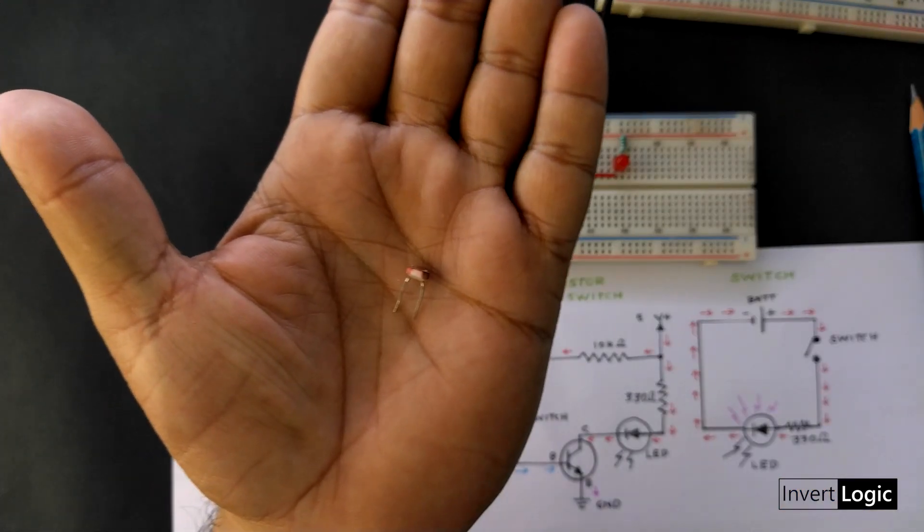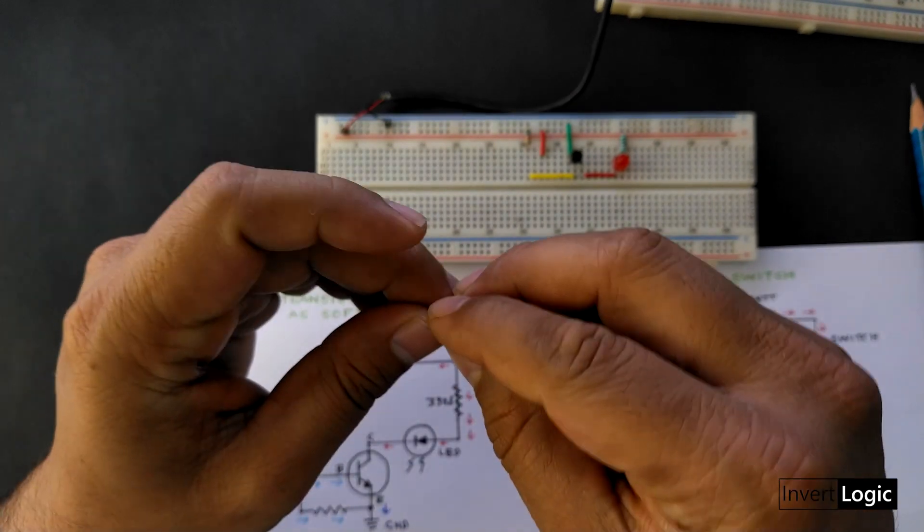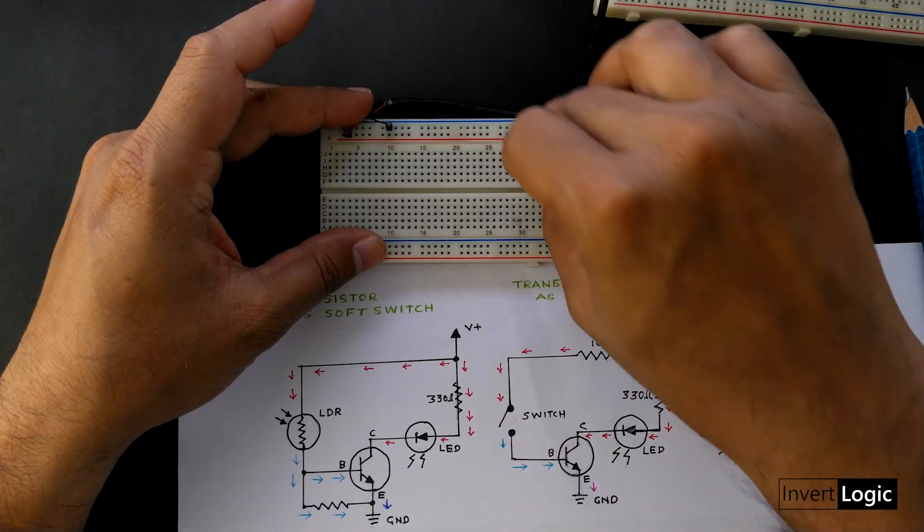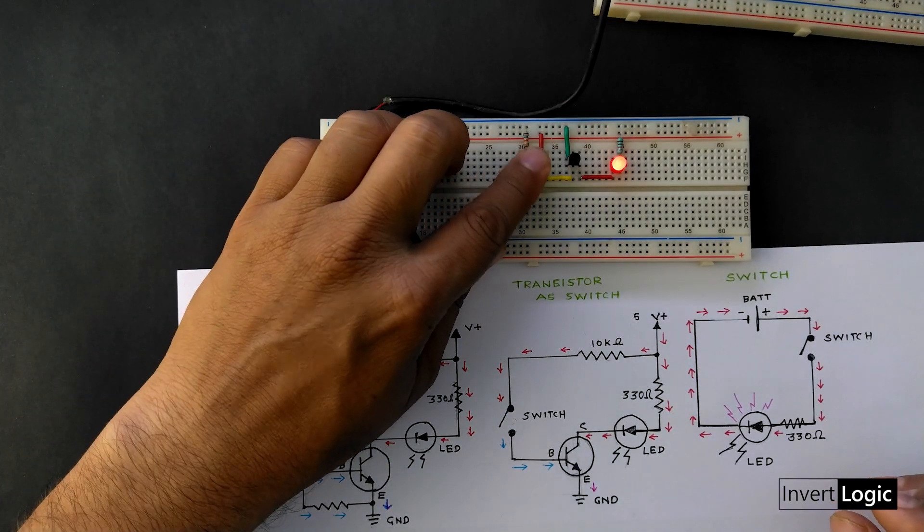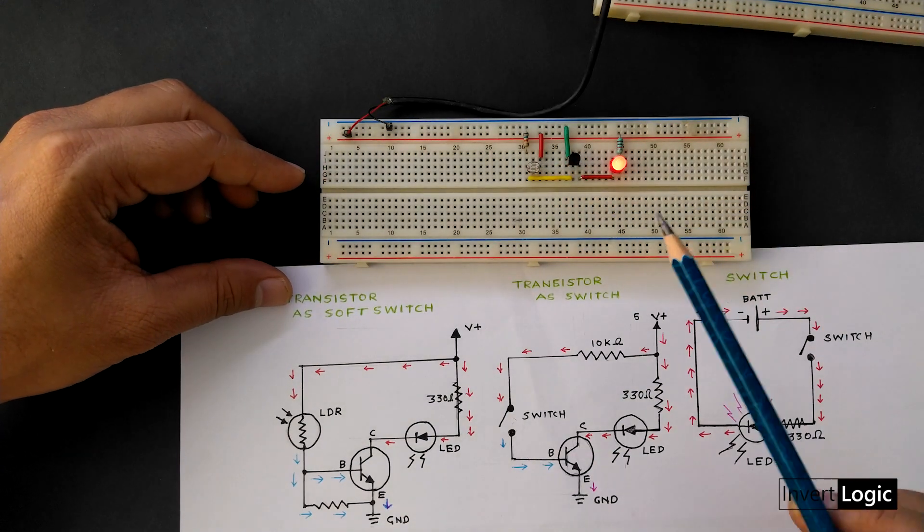So this is an LDR sensor. It acts like a resistor based on the amount of light it receives. So it is like a resistor whose resistance will increase or reduce based on the amount of light present in the room.